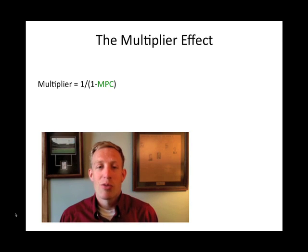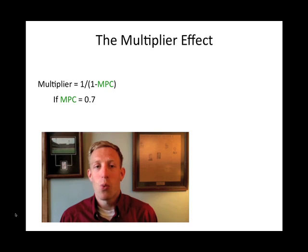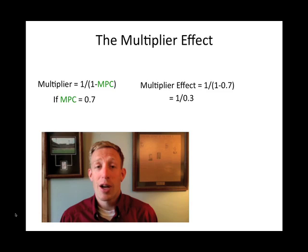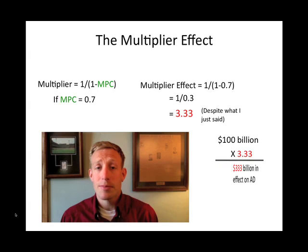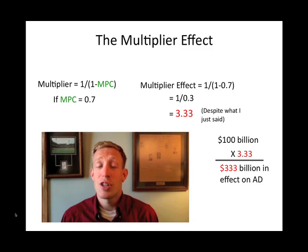Roughly 70% of GDP comes from consumption spending, so let's just assume that the marginal propensity to consume for the average household is 0.7. That means that the multiplier effect in this example would be 1 divided by (1 minus 0.7), or 1 divided by 0.3, which gives us 3. So the multiplier effect of any government spending would be 3. Let's say the government decides they're going to spend $100 billion. We take that $100 billion times 3 to give us a multiplier effect of $300 billion. Government spending may increase the GDP by $100 billion, but the multiplier effect implies that it's actually going to increase GDP by $300 billion.